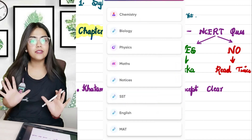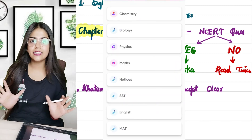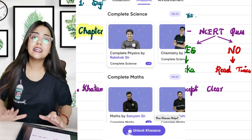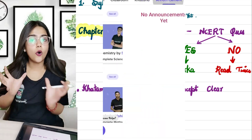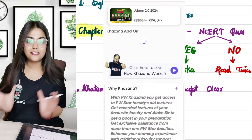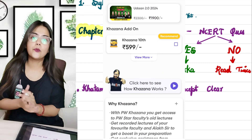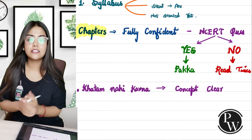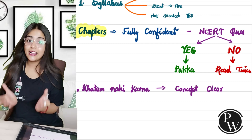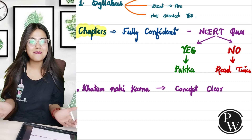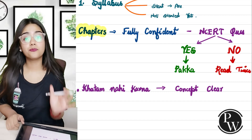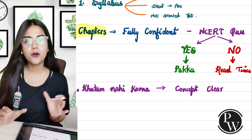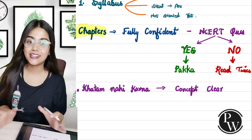In the batch, you will study 5 days a week, complete assignments, homework, and worksheets, and conduct weekly tests on time. All subjects are covered here, including Social Science, English, and Maths. This will help you build a strong foundation for IIT and AIIMS.